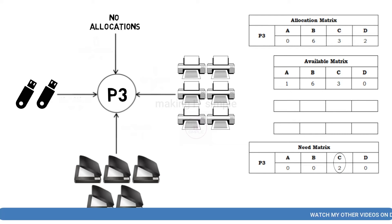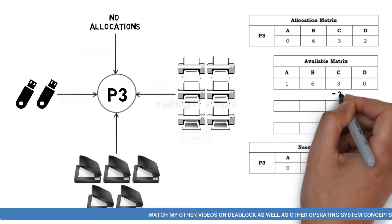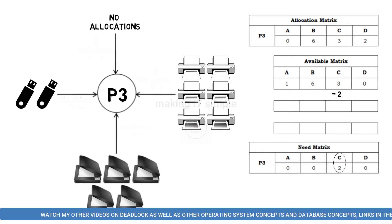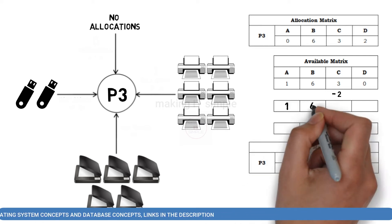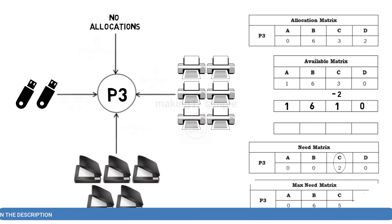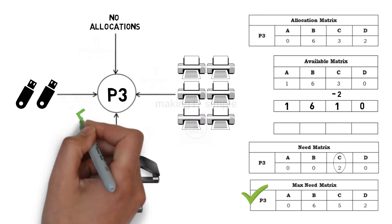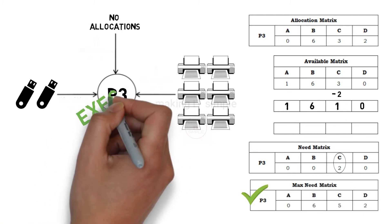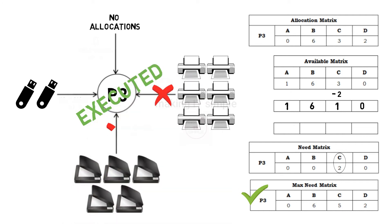So we will provide 2 instances from available resources to P3. The available matrix will get updated, and we will minus the 2 given instances of resource C. Now the available matrix will be 1, 6, 1, and 0. Now as process P3 has all the resources it required for execution, it will finish the execution, and the resources held by it will be released.